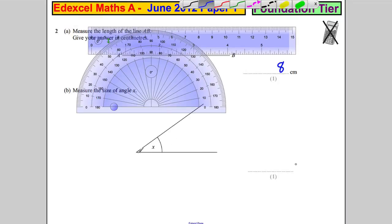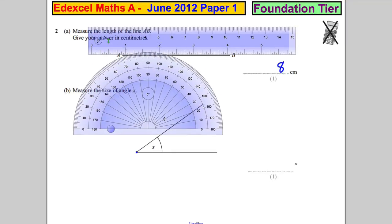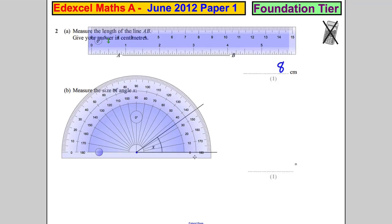Obviously make sure that you put the center of your protractor on the vertex of that angle there. And we need to measure from zero, so this time is it inside or outside?